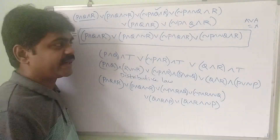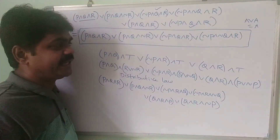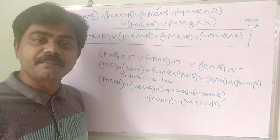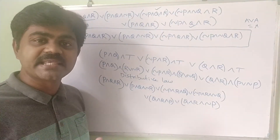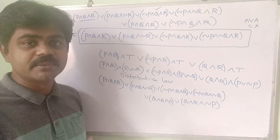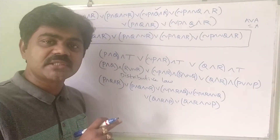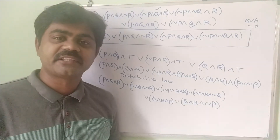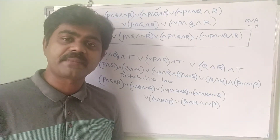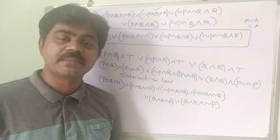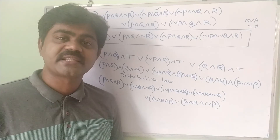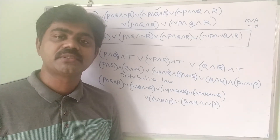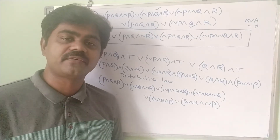So these are the two examples for PDNF without using a truth table. In the next class we will discuss PCNF without a truth table. For those watching my channel for the first time, please subscribe, share my videos with your friends and well-wishers, and support our channel in all possible ways. Thank you very much and have a wonderful day.